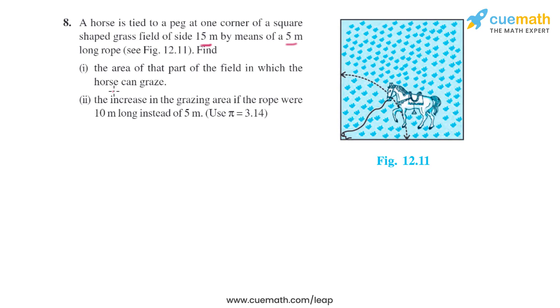Also find the increase in the grazing area if the rope were 10 meters long instead of 5 meters. This is the area which the horse can graze, which is basically a quadrant of a circle because this angle is 90 degrees as this is a square. So let's find the area.